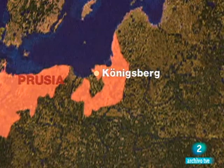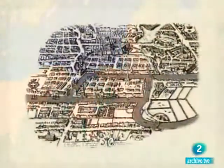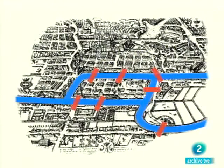Königsberg era una ciudad de la antigua Prusia, situada a orillas del Báltico. Está atravesada por el río Pregel, que la divide en cuatro partes conectadas entre sí por siete puentes.